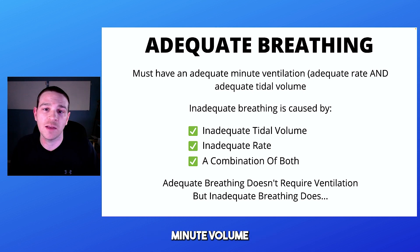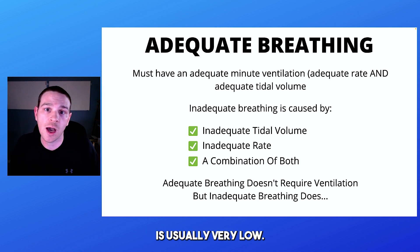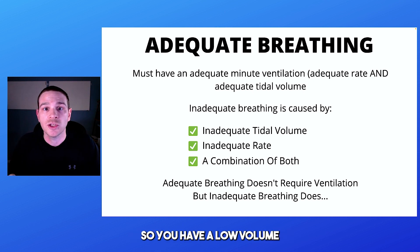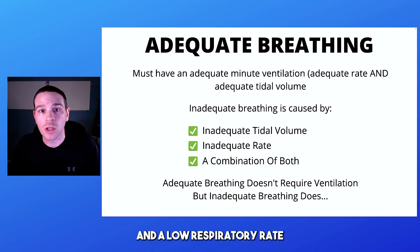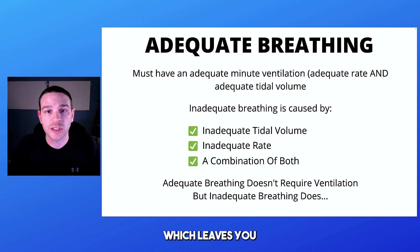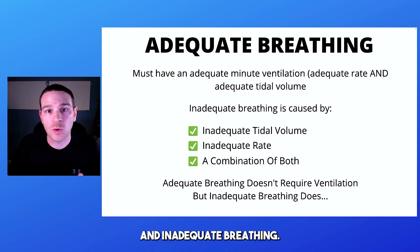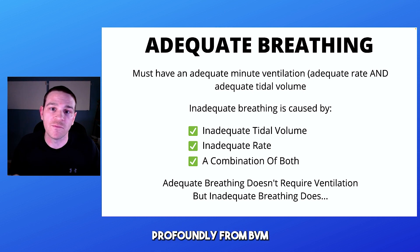They have an inadequate minute volume because their respiratory rate is usually very low, like four breaths a minute, and they're usually breathing in very shallow. So you have a low volume and a low respiratory rate, which leaves you with a low minute volume and inadequate breathing. This is the type of patient who benefits profoundly from BVM ventilations.